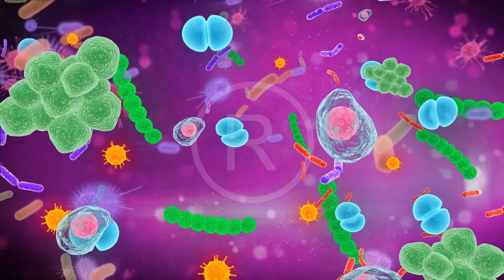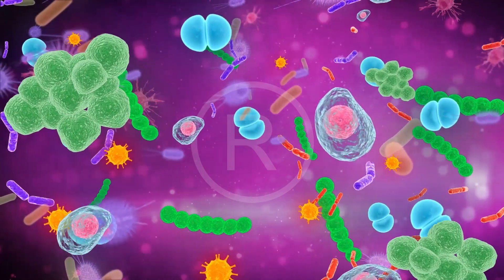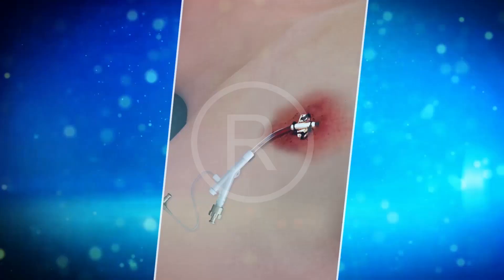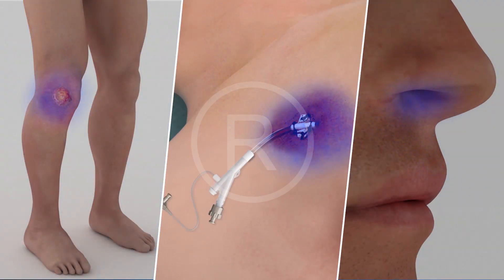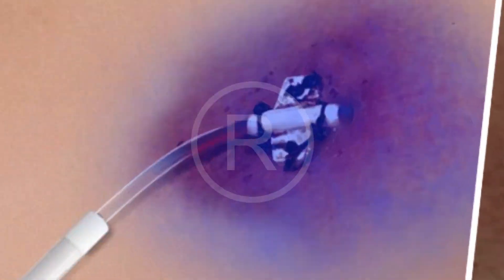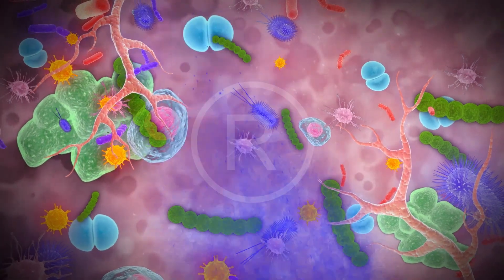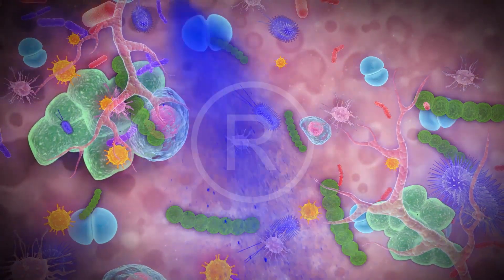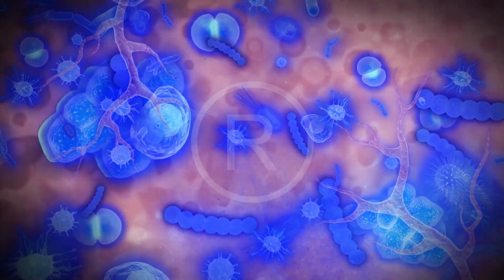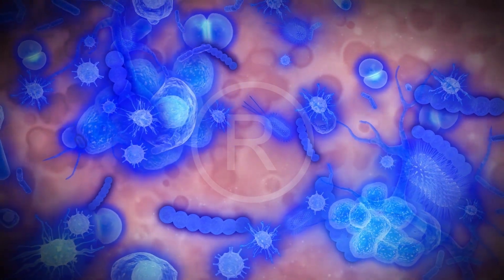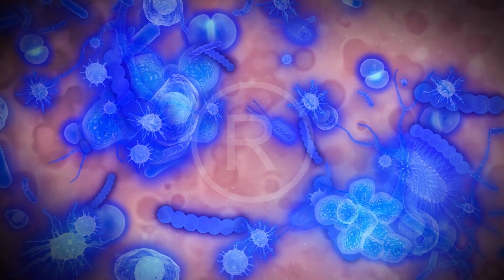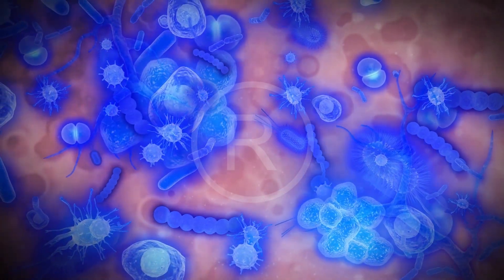Photodisinfection is a simple, painless, two-step process. First, a light-sensitive compound known as a photosensitizer is applied to the area to be treated. The positively charged photosensitizer binds to the negatively charged surface of pathogens rather than neutrally charged human cells.